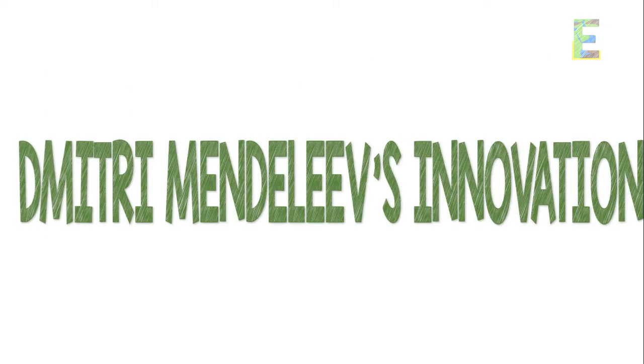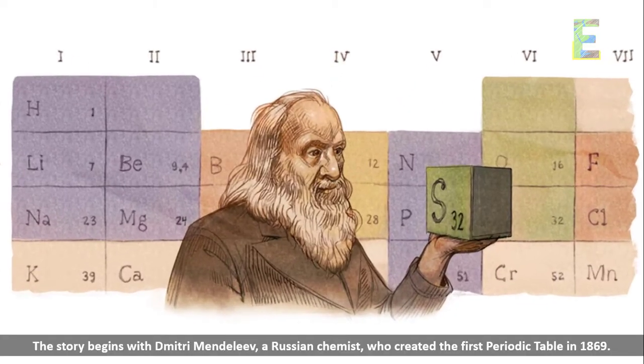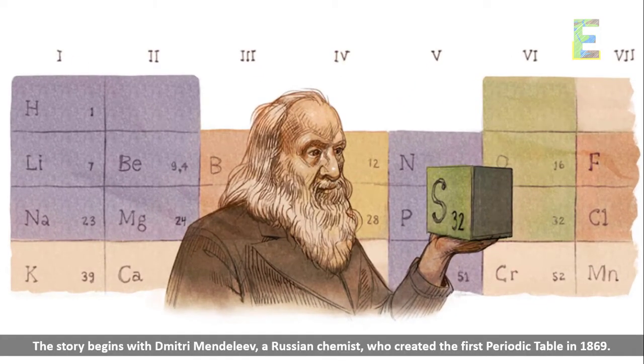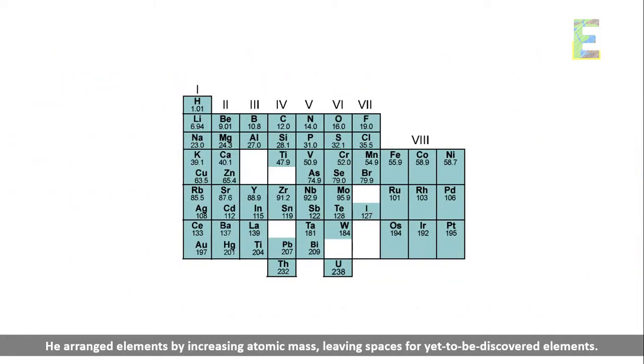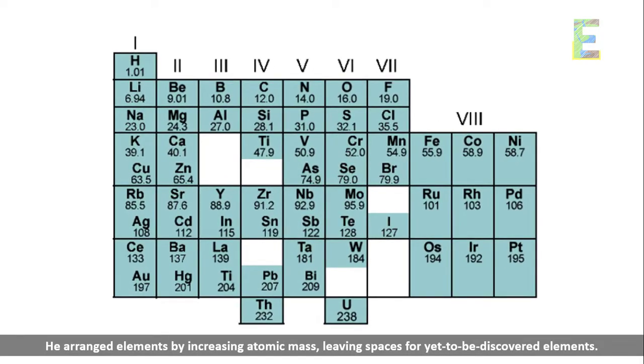Dmitry Mendeleev's innovation. The story begins with Dmitry Mendeleev, a Russian chemist, who created the first periodic table in 1869. He arranged elements by increasing atomic mass, leaving spaces for yet-to-be-discovered elements.